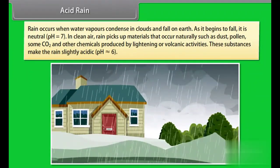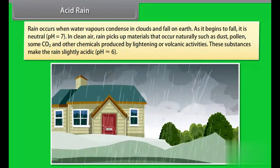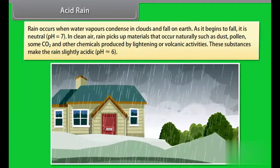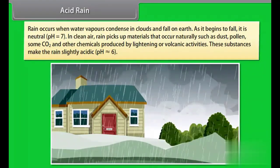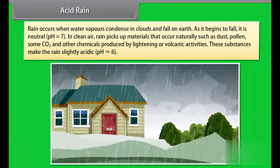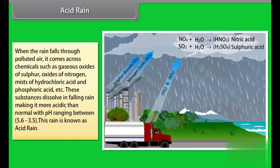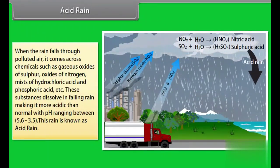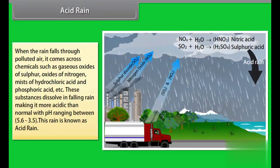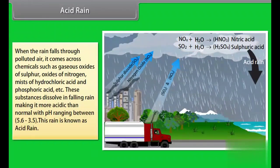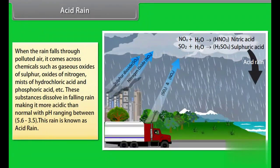Acid rain. Rain occurs when water vapors condense in clouds and fall on Earth. As it begins to fall, it is neutral, having pH value equals to 7. In clean air, rain picks up materials that occur naturally, such as dust, pollen, some carbon dioxide, and other chemicals produced by lightning or volcanic activities. These substances make the rain slightly acidic, having pH value nearly equals to 6. When the rain falls through polluted air, it comes across chemicals such as gaseous oxides of sulfur, oxides of nitrogen, mists of hydrochloric acid, and phosphoric acid, etc. These substances dissolve in falling rain, making it more acidic than normal, with pH ranging between 5.6 to 3.5. This rain is known as acid rain.